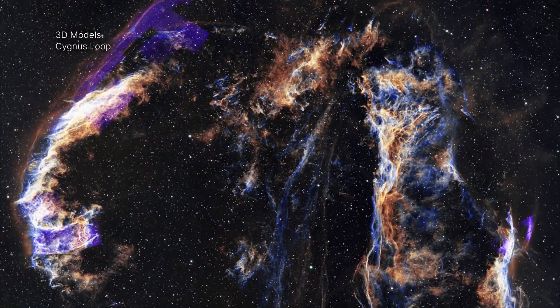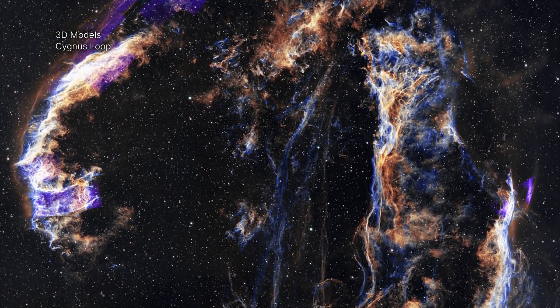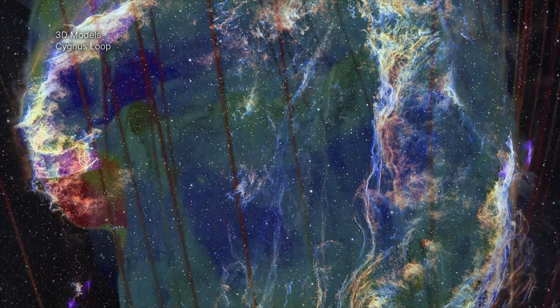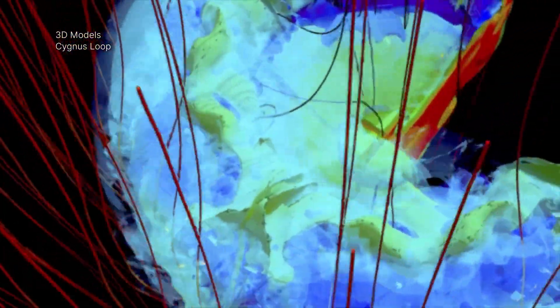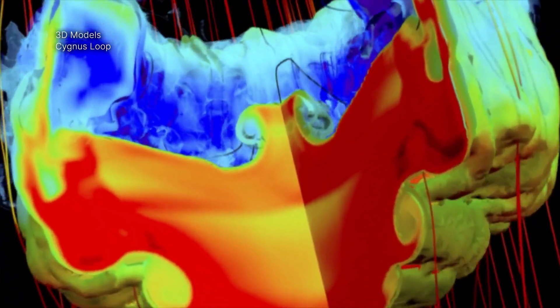The Cygnus-loop, also known as the Veil Nebula, is a supernova remnant, the remains of the explosive death of a massive star. This 3D model is the result of a simulation describing the interaction of a blast wave from the explosion with an isolated cloud of the dust and gas in between the stars.